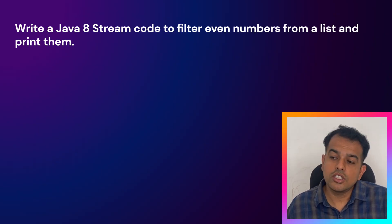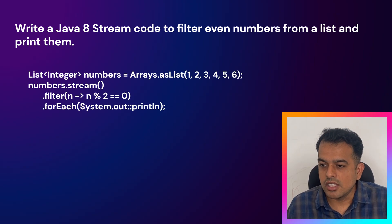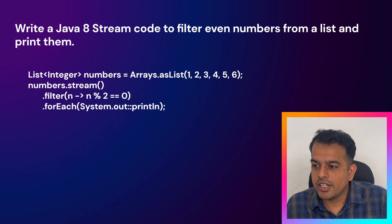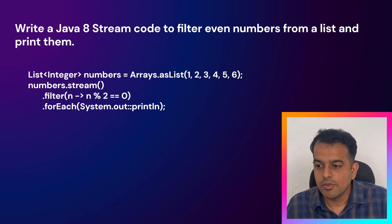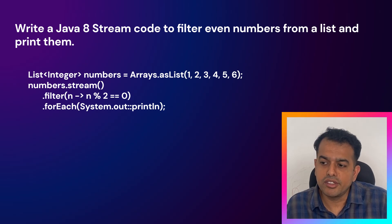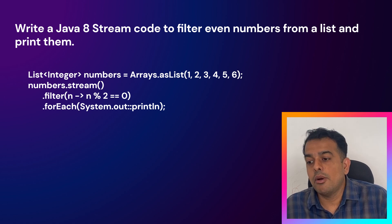Then came a coding question: write Java 8 stream code to filter even numbers from a list and print them. This is a simple problem using the Java 8 Stream API. As you can see on the screen, we created a list using Arrays.asList() with some integers. We then convert this list into a stream using the stream() method, and use the filter() method — an intermediate operation that accepts a predicate.